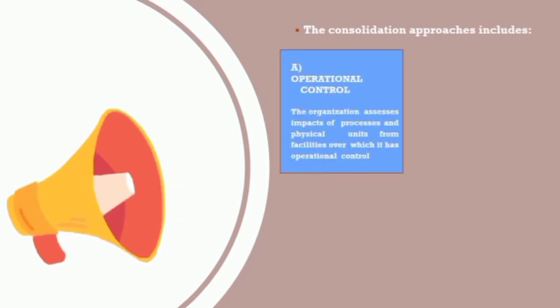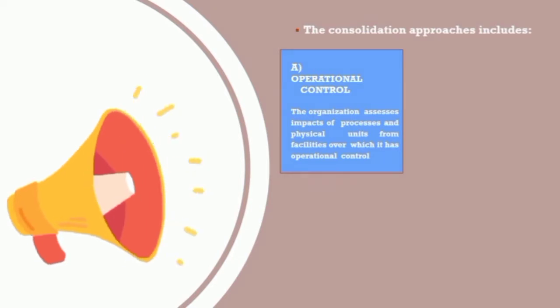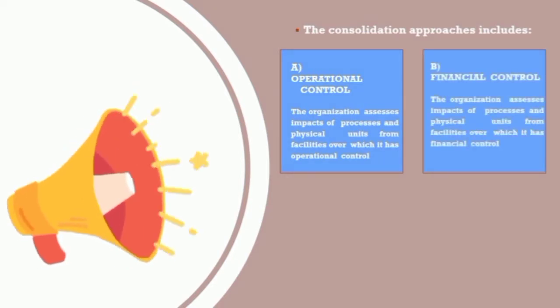Operational control: The organization assesses impacts of processes and physical units from facilities over which it has operational control. Financial control: The organization assesses impacts of processes and physical units from facilities over which it has financial control.